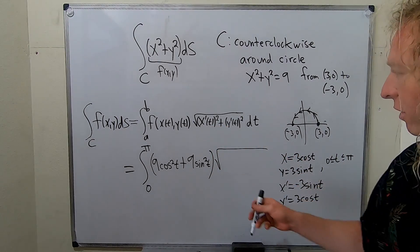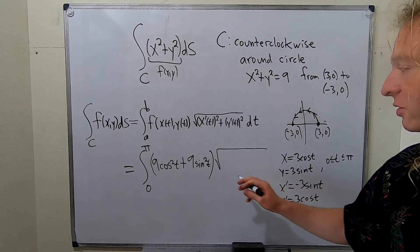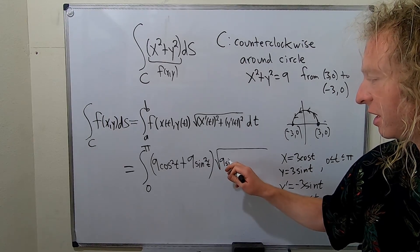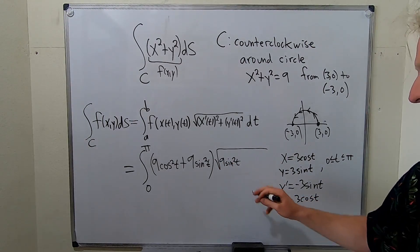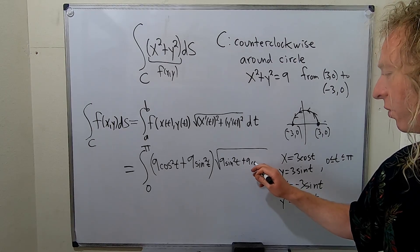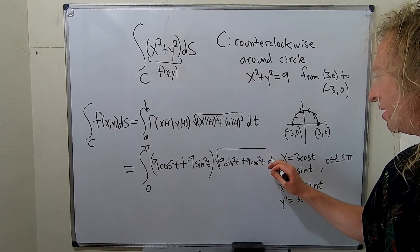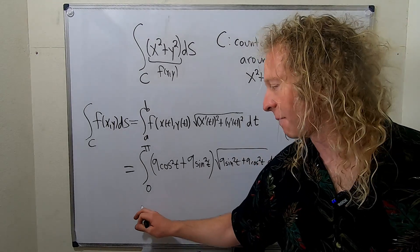you square this, you'll get a 9 again. So 9 sine squared t, the negative goes away because it's being squared. Same thing here, 9 cosine squared t dt. And you might already see it. Some beautiful stuff is going to happen with the nines.